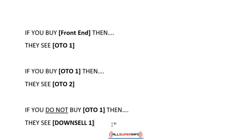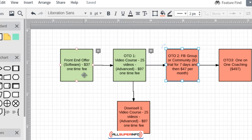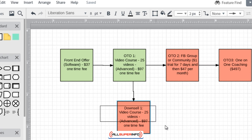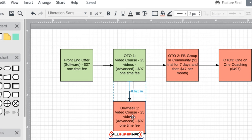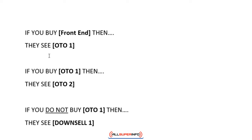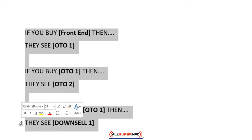Basically what I'm doing is converting what I see visually in the flowchart into text. Let's just stop here — we don't need to go further. Once you have your products created and you follow this exercise, then you can get back over to JVZoo and simply plug in what we have written right here.